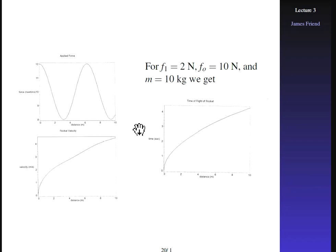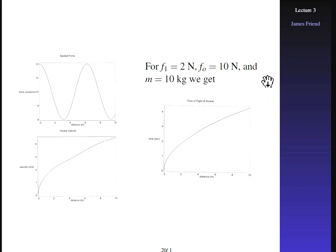The point is that the velocity does get affected, and calculating this by hand is fairly tricky. Here we've used F₁ as two newtons, F₉ as ten newtons, and M equal to ten kilograms.